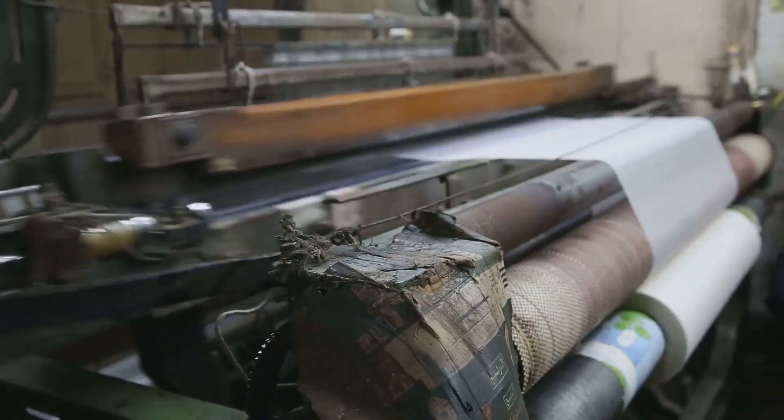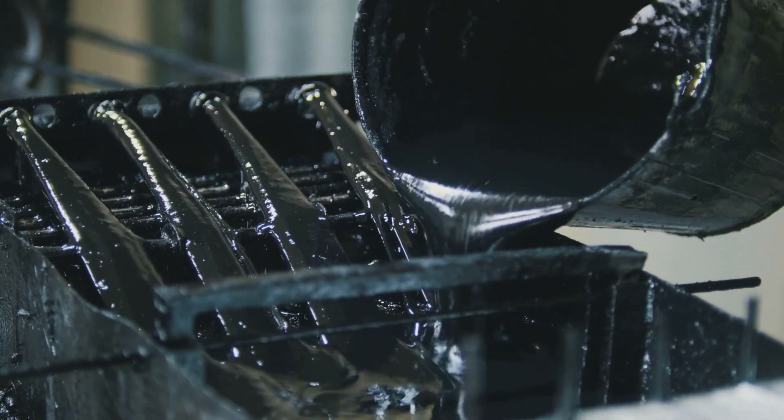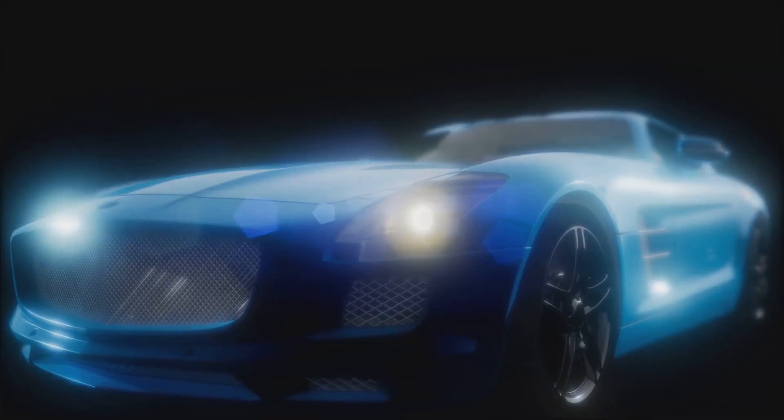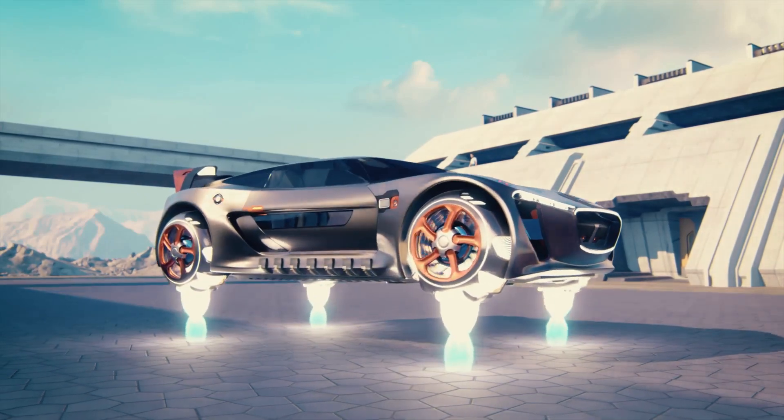When you see the sleek black weave on a high-performance bike or jet, you're witnessing chemistry and physics in action. We take these fine threads, weave them into fabric, and mold them into shapes that push the boundaries of what's possible. Carbon fiber lets us build lighter, faster, and stronger, turning a common element into a material of the future.